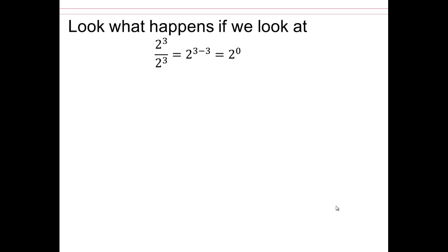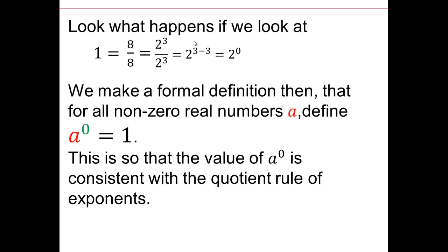We know what 2 to the 1, 2 to the second means. What about 2 to the 0? Well, we also have equivalent fraction concepts. So we can think of 2 to the third over 2 to the third as 8 divided by 8. And by equivalent fractions, that is the same as 1. So that would mean that 2 to the 0 would have to equal 1. We make a formal definition then that for all non-zero real numbers a, we define a to the 0 equaling 1.